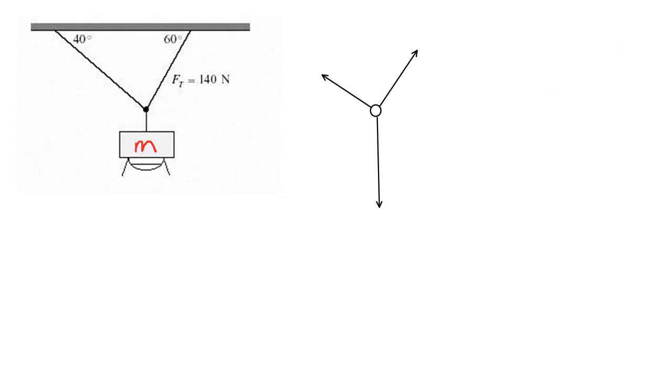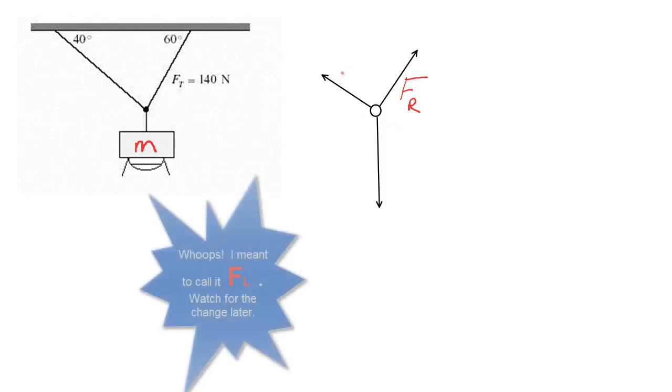Now we're going to relabel some of these forces. The tension that is given, instead of calling it FT, I'm going to call this F right. And we know the angle is 60 degrees. We'll get back to that in a second. The tension on the left, we'll call that FL. And of course the force that's pulling straight down at that center dot is the force of gravity, Fg.